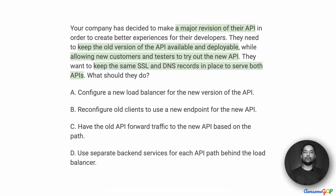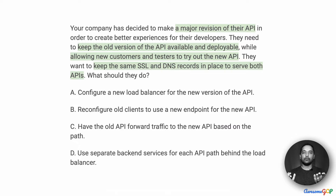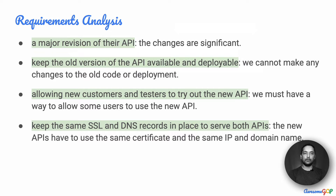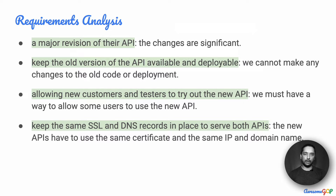The requirement here is to support a completely different API version which is a major upgrade, and we need to keep both of these available at the same time such that some of it can be accessed by the new users, but we do not want anything changed with respect to how it is accessed. Since we have to keep the old version of the API available, we cannot remove it and we also do not want to make any changes to the old code deployment.